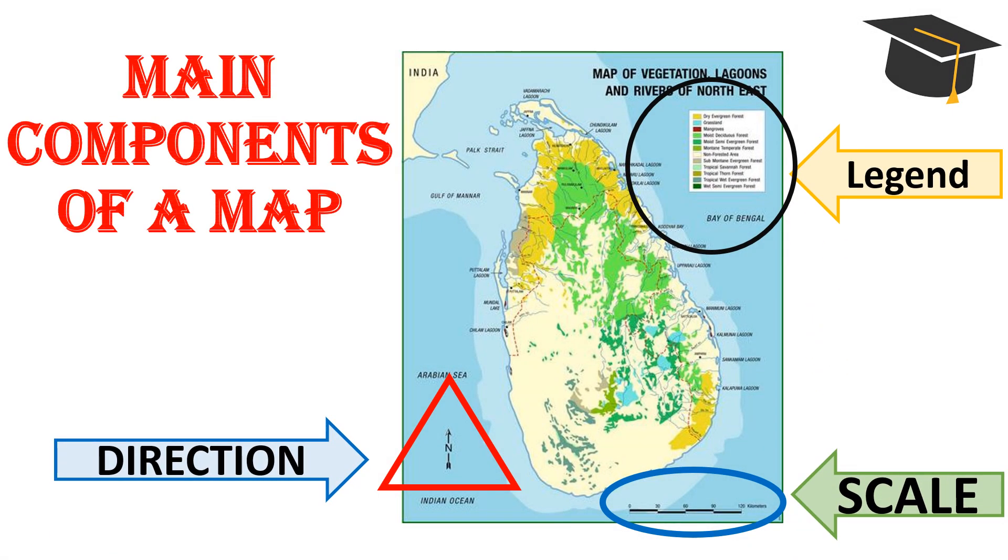Let's talk about the main components of a metric map. In here, I have represented a thematic map with main components. Basically, each map contains direction, scale and legend.